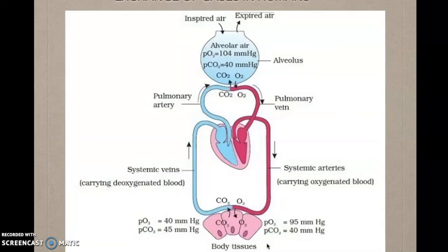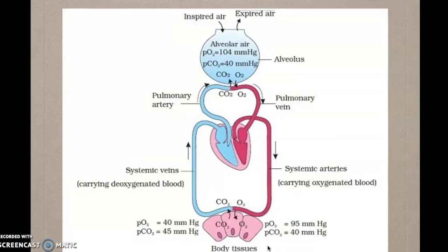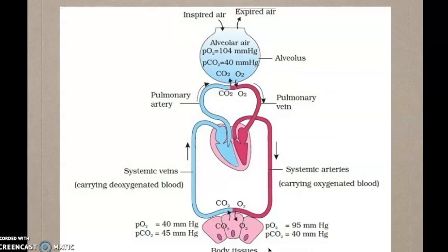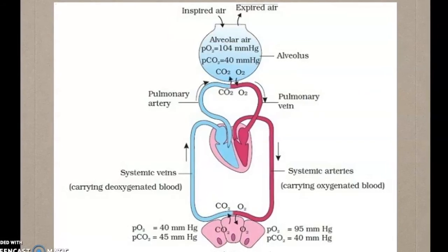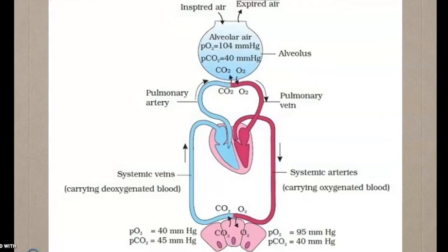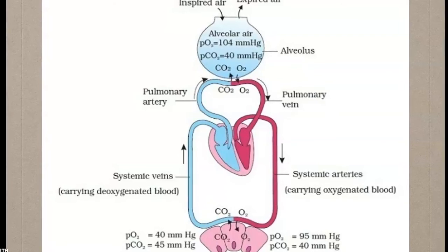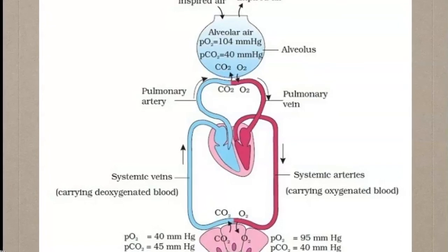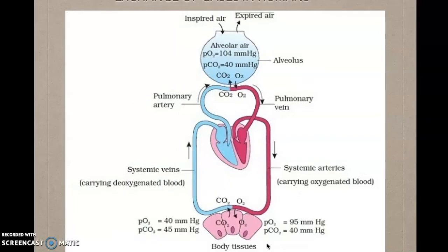Next is the exchange of gases in humans. This diagram shows the exchange of gases taking place inside our body. There are two places where exchange of gases occurs: first, between the alveoli and the blood; second, between the blood and the tissues. In the alveoli, air diffuses on the basis of partial pressure of oxygen. The PO2 is more in the alveoli, so O2 diffuses from alveoli to blood. The PCO2 is low in alveoli, so CO2 diffuses from blood to the alveoli. The same process takes place between tissue and blood.